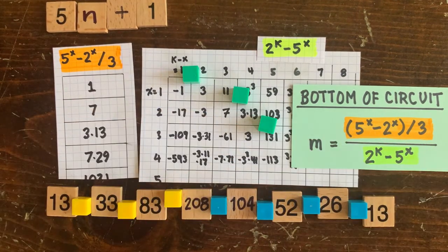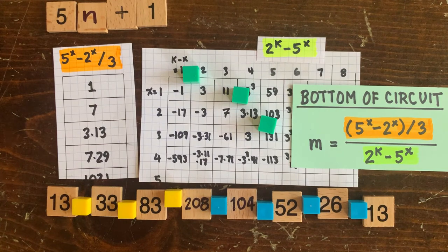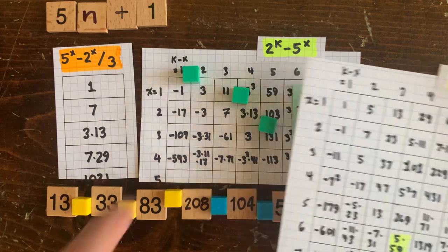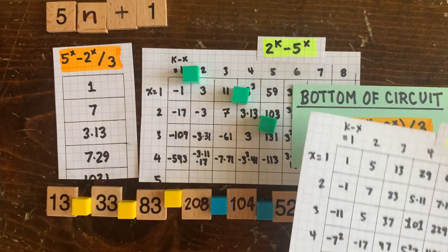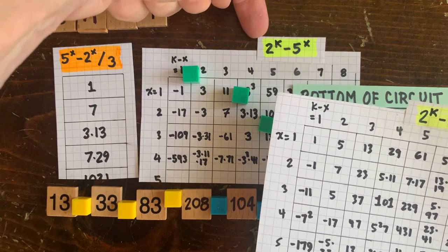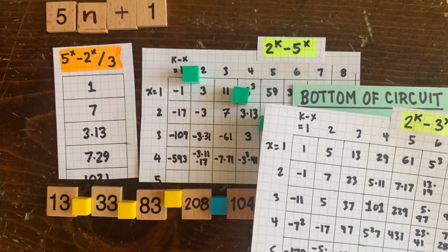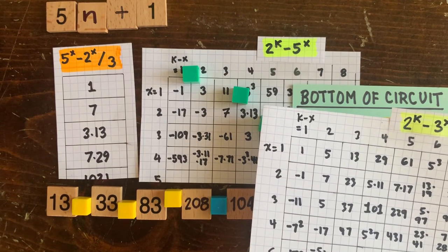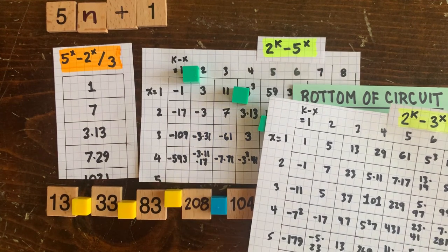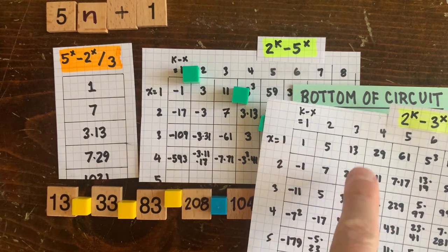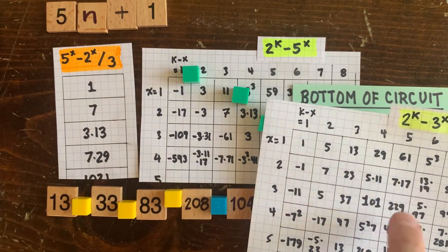Okay, last thing. When we compare these two charts, the 5n plus 1 chart has a lot of factors of 3 everywhere and no factors of 5. And that's natural because 2 to the k minus 5 to the x isn't divisible by 5 because 2 to the k isn't divisible by 5. Whereas in the 3n plus 1 chart, we've got a lot of 5s but no 3s for the opposite reason.